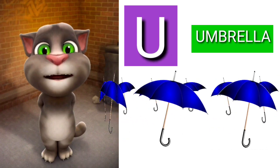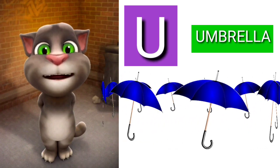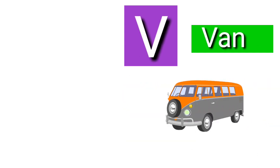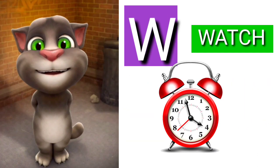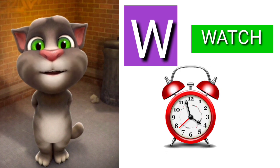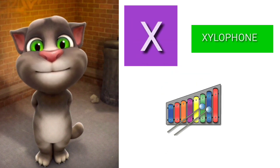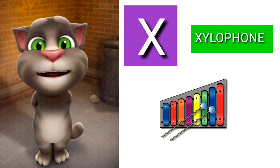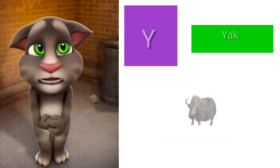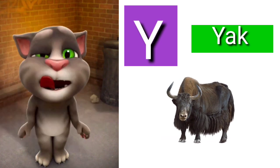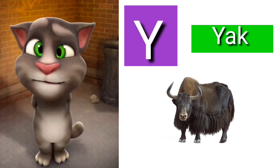U for umbrella, V for well, W for watch, X for xylophone, Y for yak.